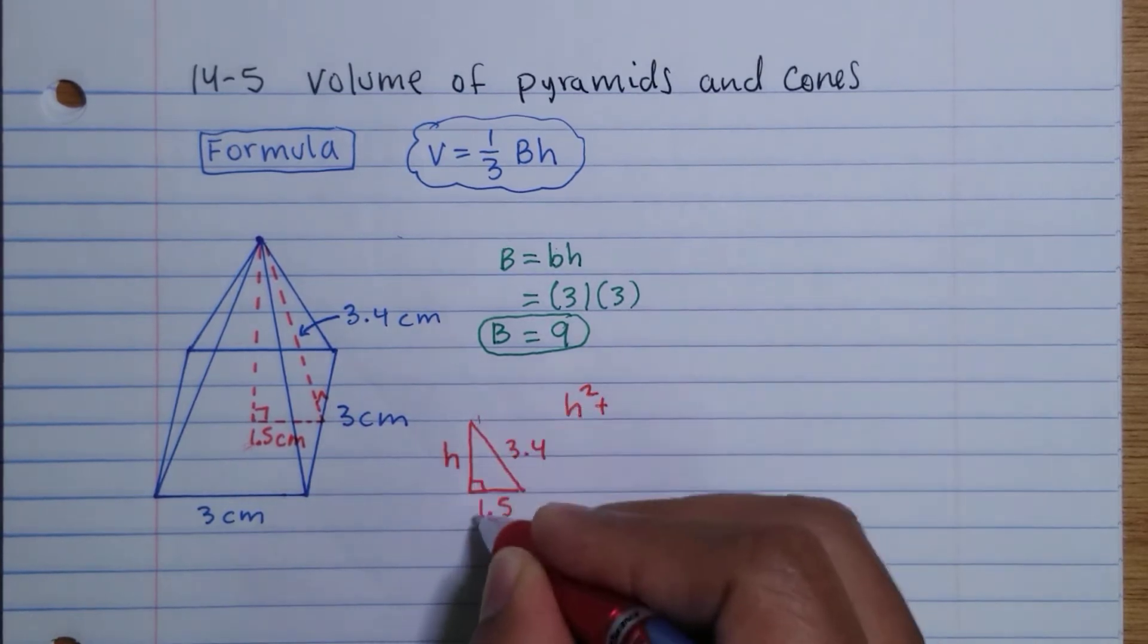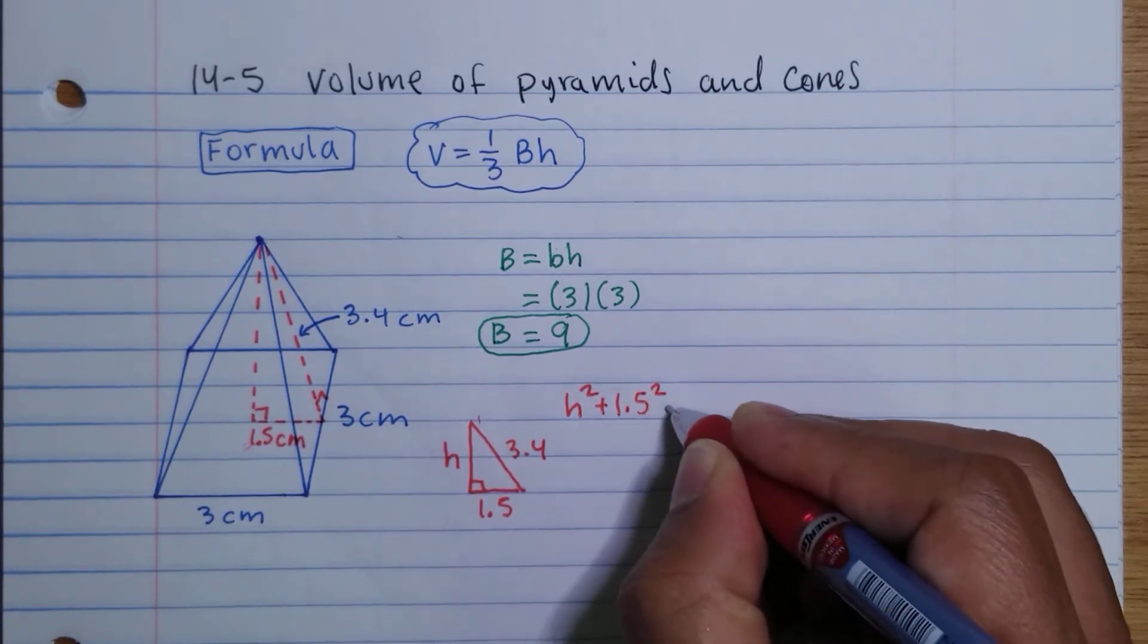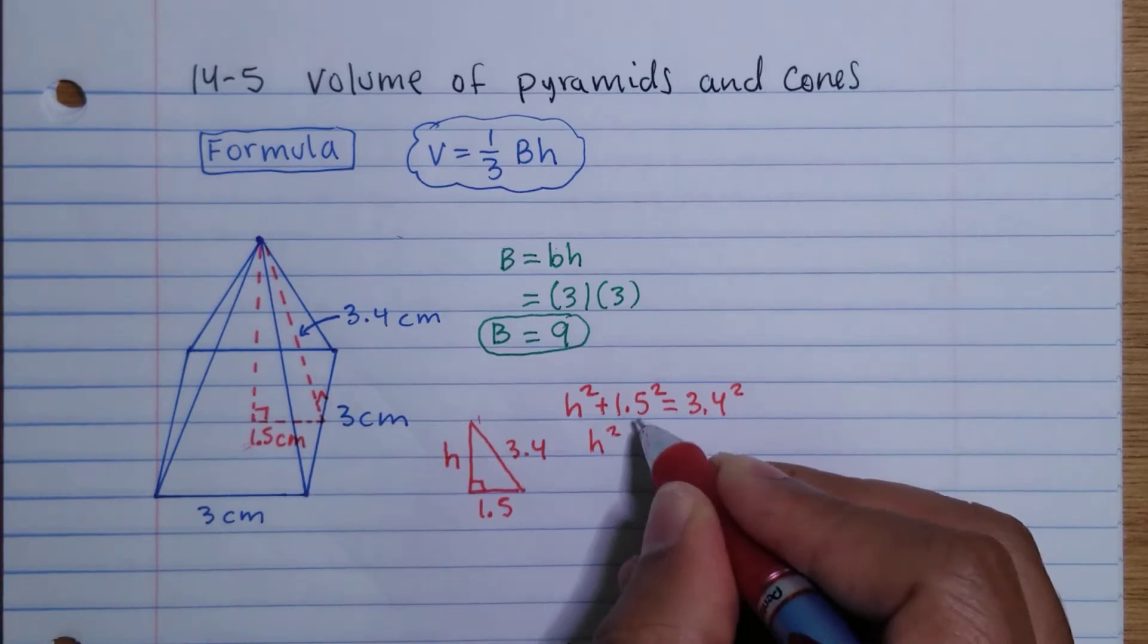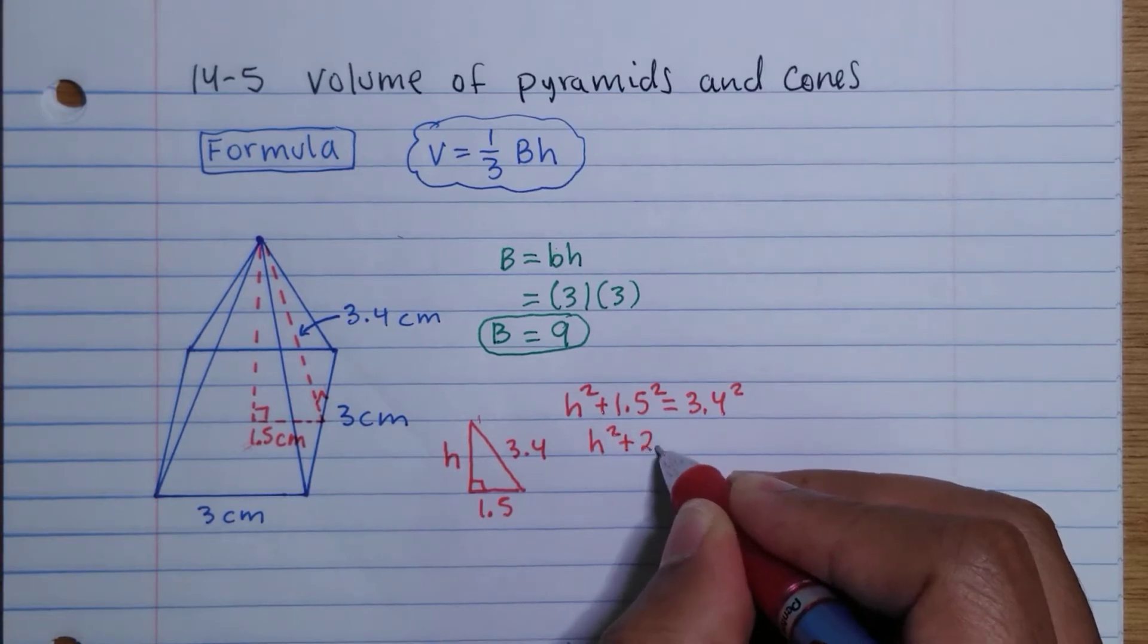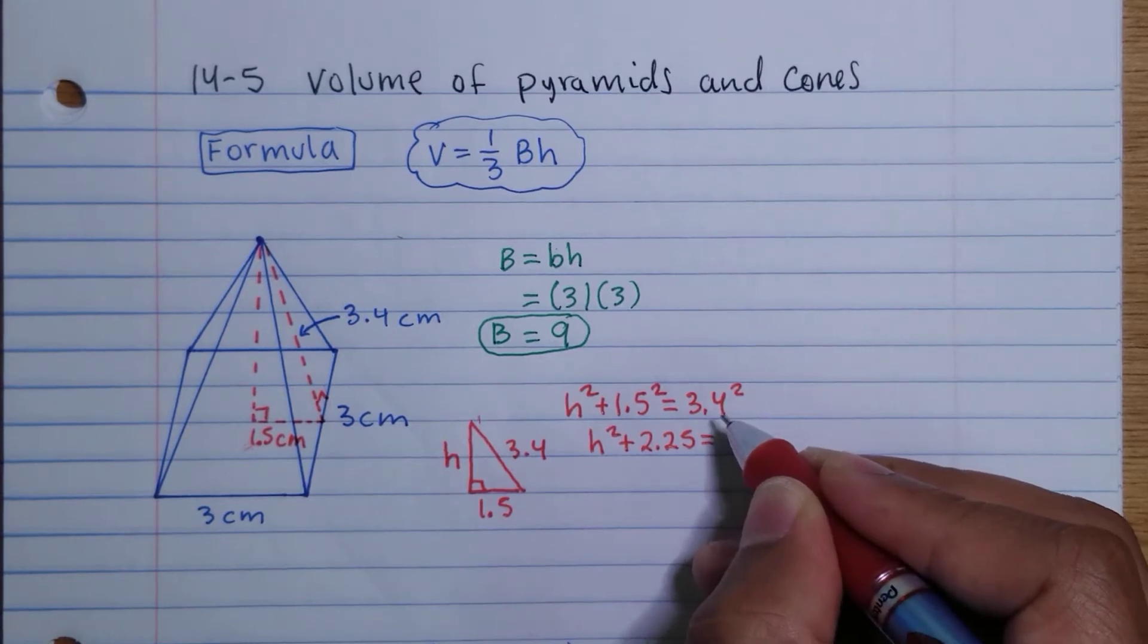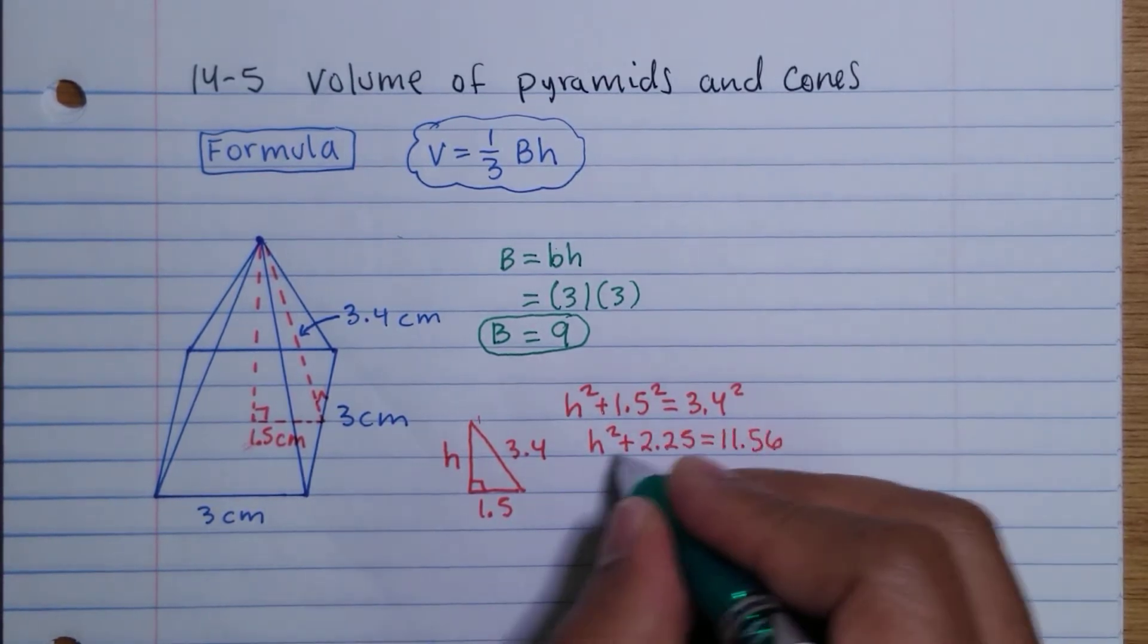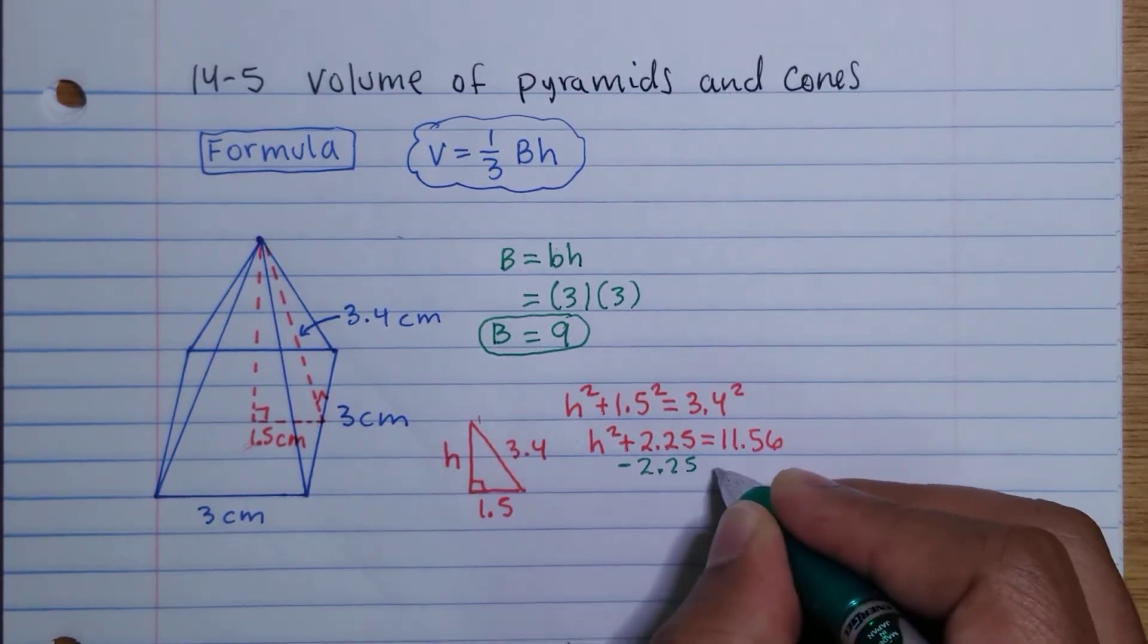So this is going to be H² plus 1.5² equals 3.4². So H² and 1.5² is going to be equal to 2.25, and then 3.4², that one is equal to 11.56. Since we're trying to solve for the height squared, I'm going to subtract 2.25 from both sides of the equation.